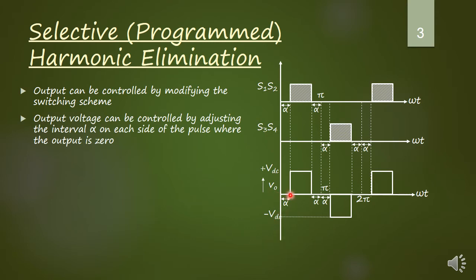From 0 to alpha, all the switches are off, therefore the output voltage is 0. From alpha to π minus alpha, switches S1 and S2 are on, so the output voltage is VDC. At π minus alpha, S1 and S2 are turned off, therefore the voltage comes back to 0. Again till π, since all switches are off, the voltage is 0. The same concept applied to S3 and S4 gives output voltage minus VDC, delayed by an angle alpha. So compared to the previous waveform, the voltage waveform has changed — there are some intervals of 0 in between.